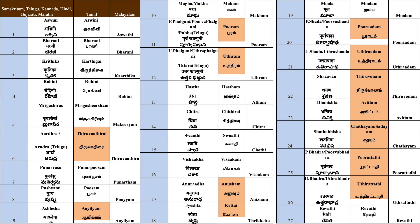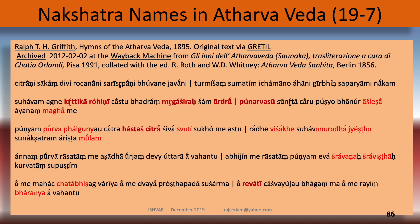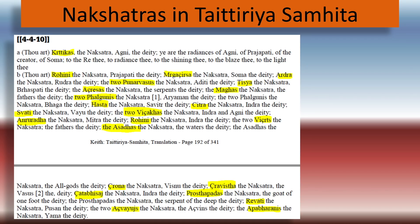How old are the Nakshatras? At least as old as the Atharva Veda. Griffith's 1907 translation shows a whole list of Nakshatra names — these appear to be the Sanskrit names, not the Tamil variants. It is also there in Taithriya Samhita, where you find a lot of the Nakshatra names, again appearing to be Sanskrit names and not the Tamil names.